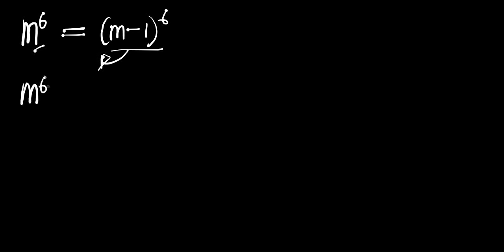In this video we are going to solve this exponential equation: n to the power 6 equals (n minus 1) all to the power 6, and we are solving for all the complex and real solutions. What we are going to do is rearrange this equation to have n to the power 6 minus (n minus 1) to the power 6 equals 0.